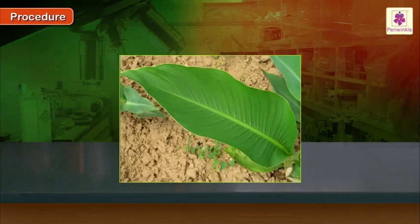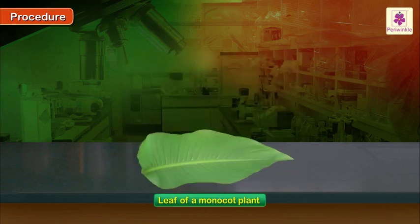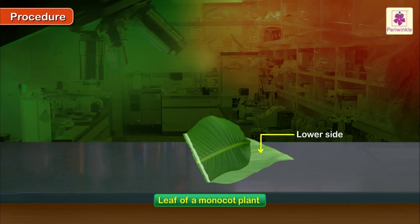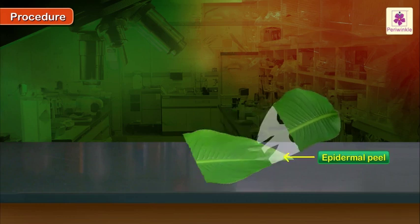Procedure: Select a stiff fresh leaf of a monocot plant and fold it in the middle so that the midrib snaps. Slowly and gently tear the leaf at the fold, keeping the two halves almost parallel to each other to obtain an epidermal peel from the suitable surface depending on the type of plant used.